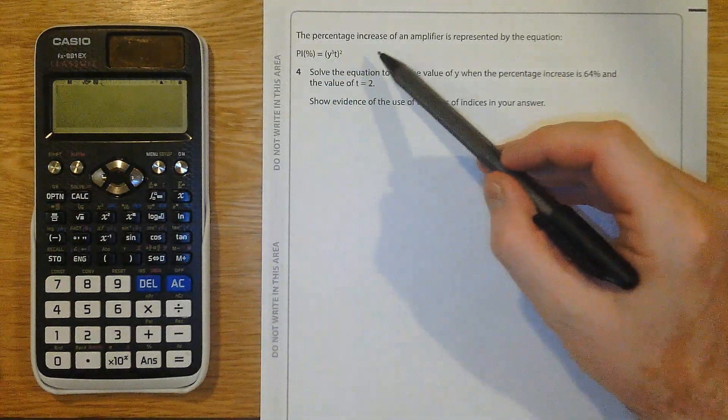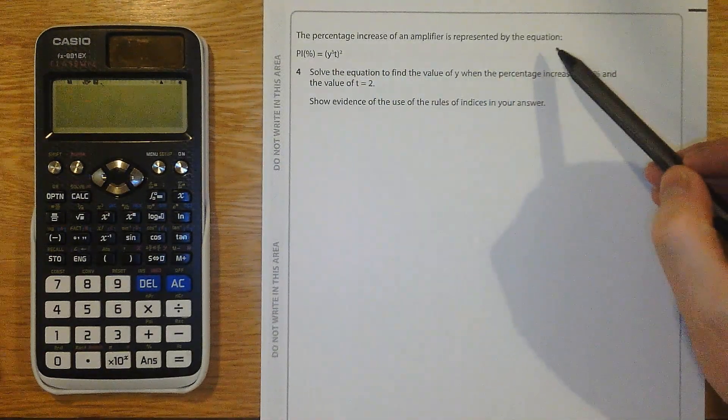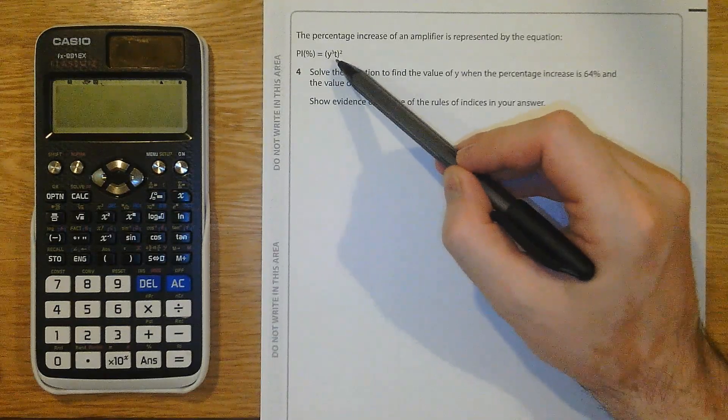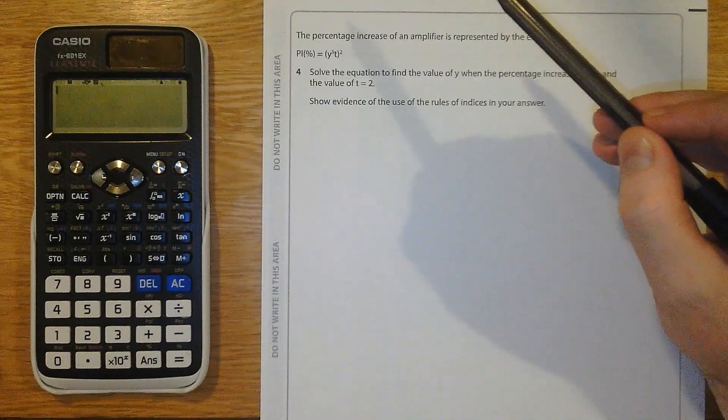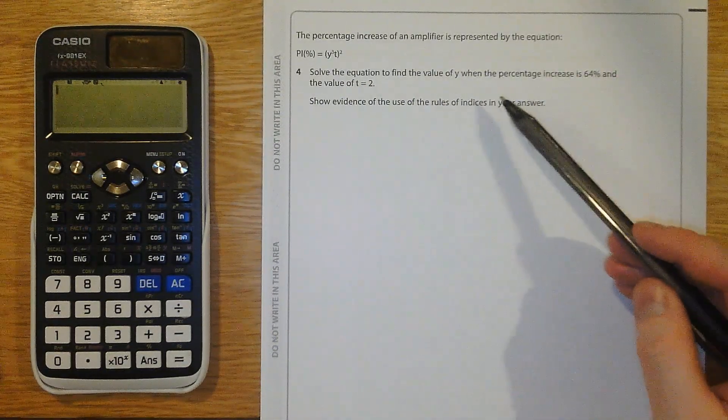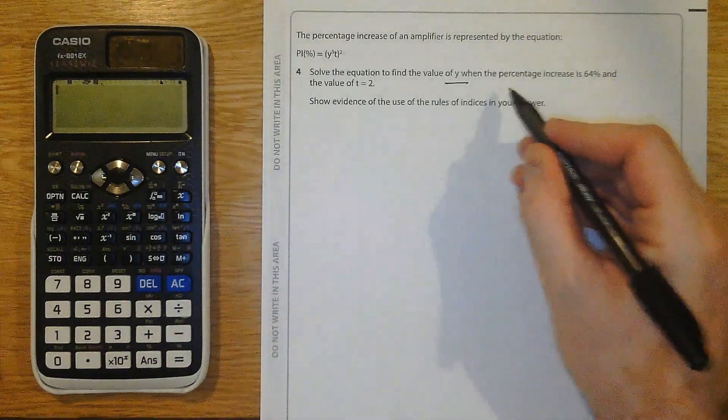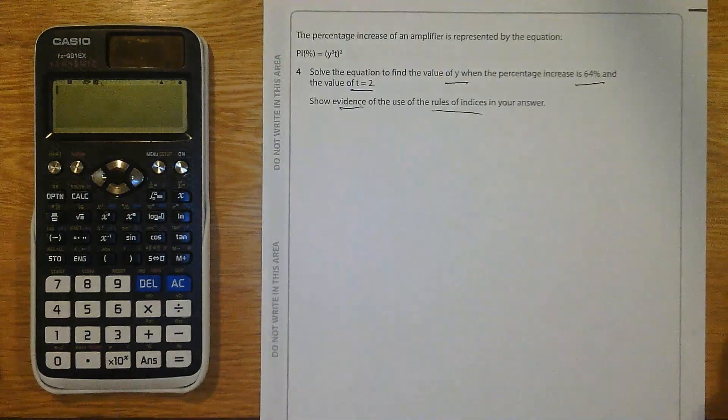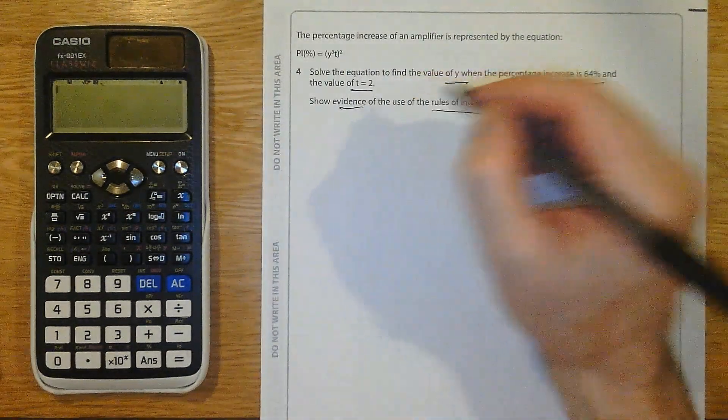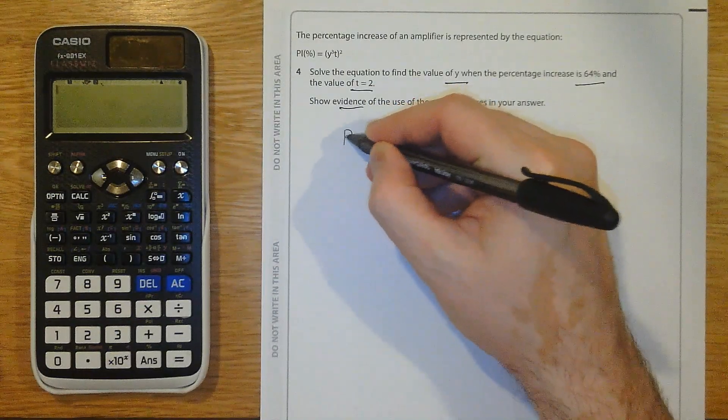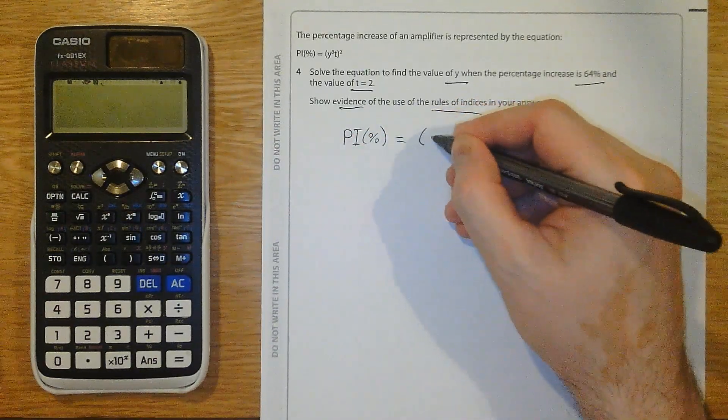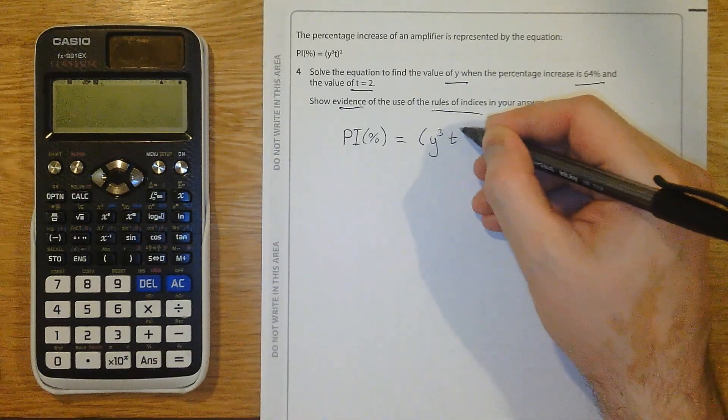Question four. The percentage increase of an amplifier is represented by the equation. PI, percentage increase as a percentage, equals (y cubed t) squared, with the square outside the brackets. Solve the equation to find the value of y when the percentage increase is 64 and the value of t equals 2. Show evidence of the rules of indices. Now, let's start out. I've got PI as a percentage. That's a really nasty symbol, having all those bits there. Equals brackets, y cubed, t, close brackets, squared.